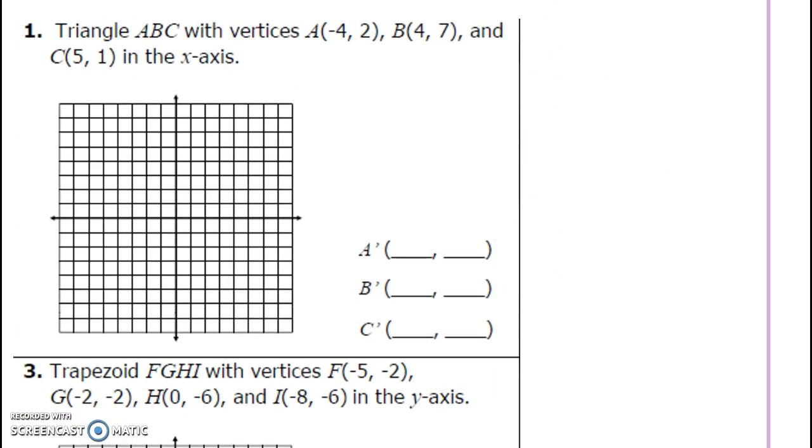Okay, so triangle ABC with vertices blah, blah, and blah in the x-axis. So this in the x-axis, this is what you're going to reflect over. That's all that in the x-axis means, reflect over x-axis. So the way I like to do this is I go ahead and graph what's called the pre-image. So (-4, 2), I'm going to graph (4, 7). 1, 2, 3, 4, 1, 2, 3, 4, 5, 6, 7. And then I'm going to graph (5, 1). 1, 2, 3, 4, 5, 1. Once I graph these three, I'm going to make a triangle out of it. Now, why am I going to make a triangle? Because it told me to right here. So we're going to graph this triangle and we're going to reflect it.